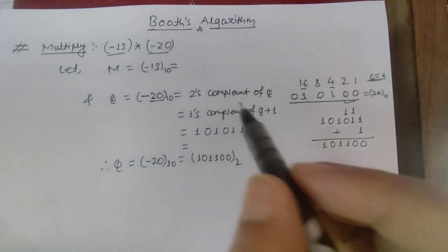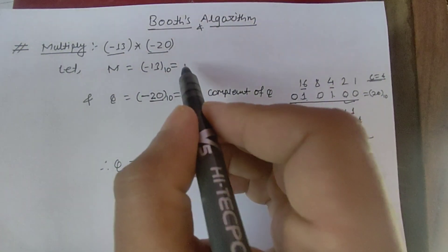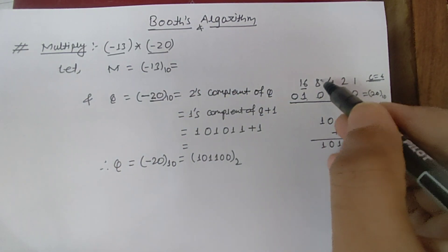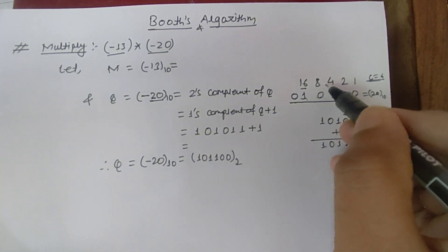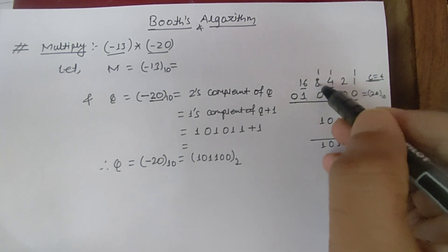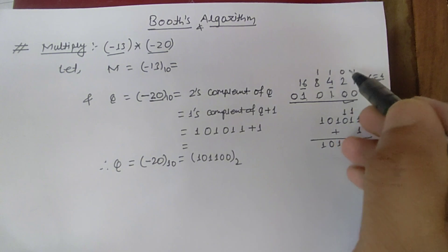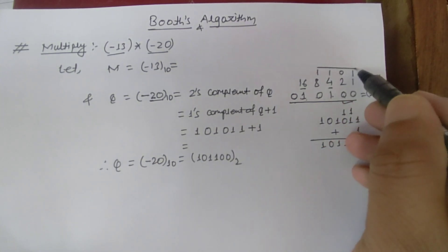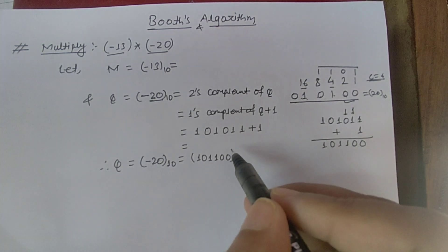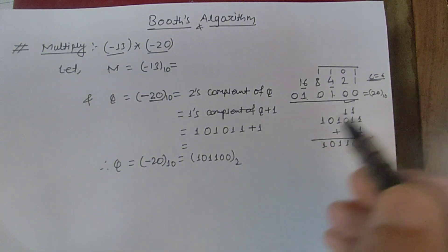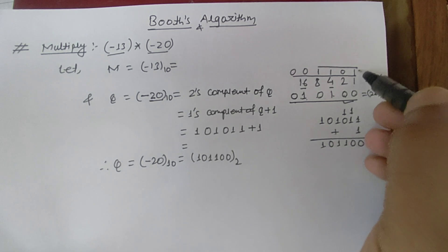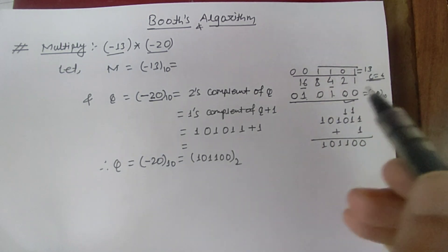Now let's find the binary value of minus 13. First, 13 in binary: 8 + 4 + 1 = 13, so binary 13 is 1101. We need to add two extra bits to match the 6-bit format used by the larger number, giving 001101 as the 6-bit binary equivalent of 13.